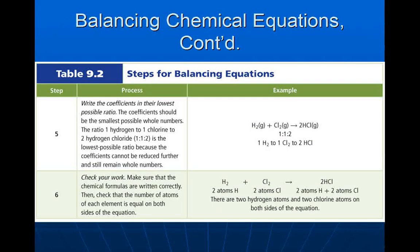Step 5: I'm going to write the coefficients in their lowest possible ratio. The coefficients should be the smallest possible whole numbers. The ratio of 1 hydrogen to 1 chlorine to 2 hydrogen chloride is the lowest possible ratio, because the coefficients cannot be reduced further and still remain whole numbers. You don't want to go into fractions.